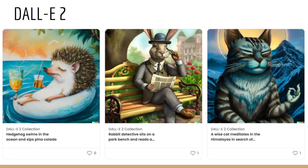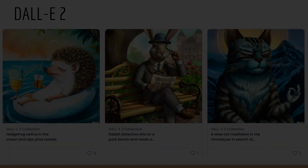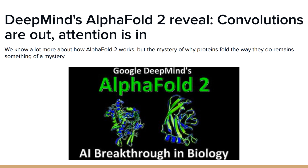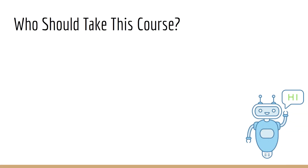In computer vision, transformers have impressed everyone by combining image and text representations to generate amazing art based only on a simple text description. In molecular biology, transformers have helped scientists solve a long-standing problem called protein structure prediction — how we can map your genetic code to actual physical proteins. This is the perfect task for NLP since the genetic code really is just a programming language — the programming language of life.